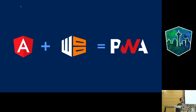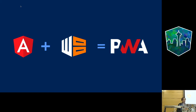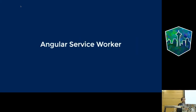This is why there are libraries to help automate these features. One example is Workbox — a PWA automation library from Google. It's the successor to the previous toolkit called SW Precache. But we're here to talk about a different, more natural way to do it for Angular apps, called Angular Service Worker, or NGSW for short.